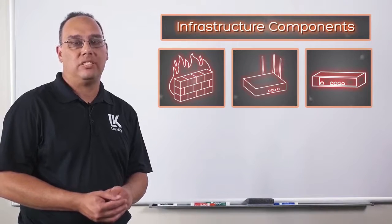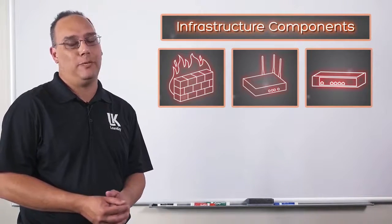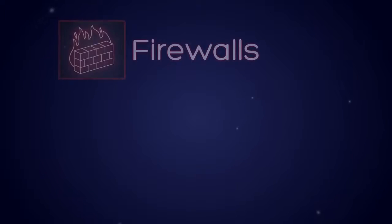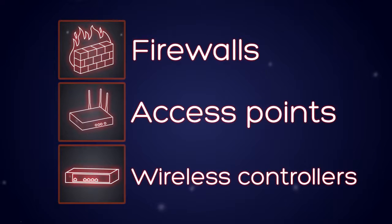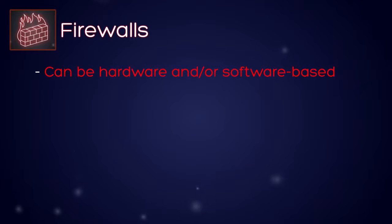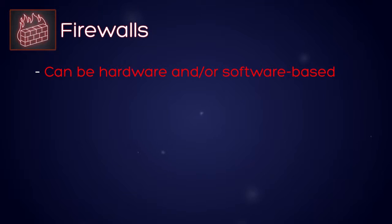You've seen the basics of these three components; now let's look at some details. There are three basic aspects of the previous diagram we want to focus on: firewalls, access points, and wireless controllers. Firewalls can be hardware and/or software based. Cisco has hardware devices that serve as firewalls, and you may have seen Windows Firewall inside Windows Server, Windows 8, Windows 10, and so on.